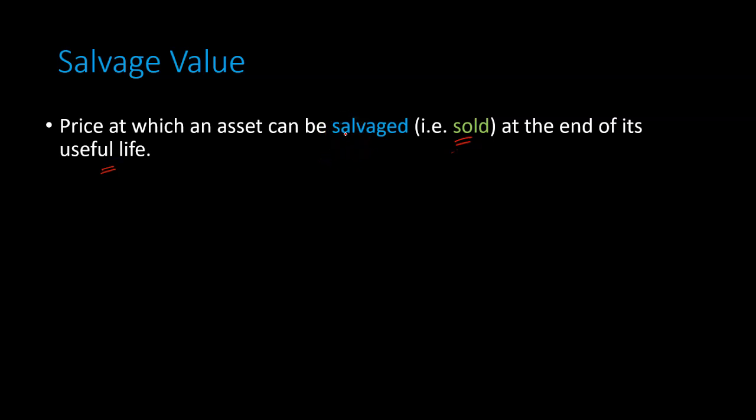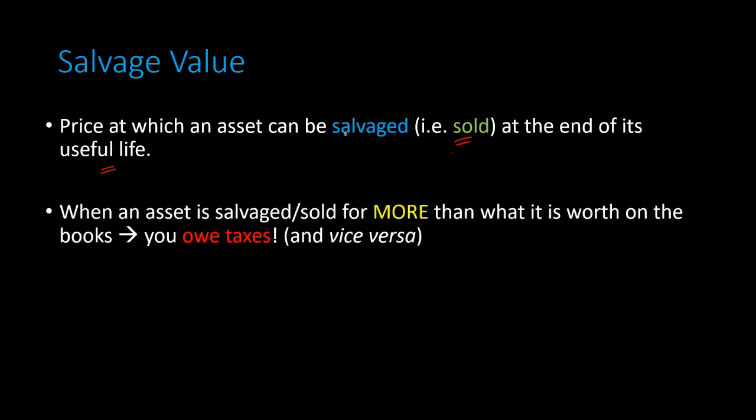But here's the punchline. What you sell the asset for in the market can be different from what the asset is worth on the books or the accounting value of the van or the machine or the asset can be very different from the salvage value. And whenever that happens, there can be tax implications.